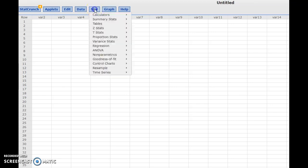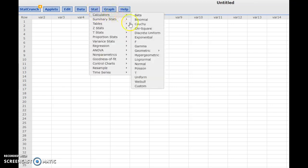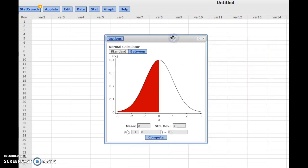In StatCrunch, click Stat, Calculators, Normal. A box will open showing a normal curve. By default, a standard normal curve will be displayed.